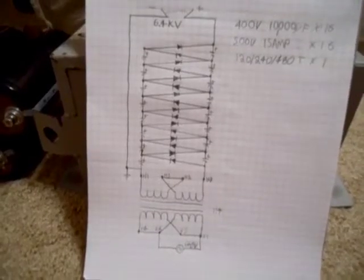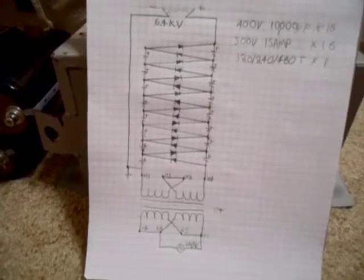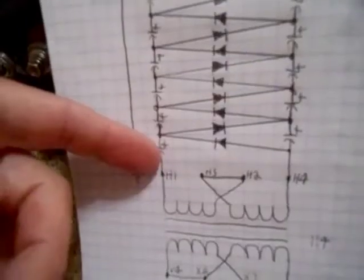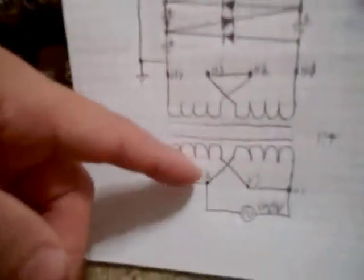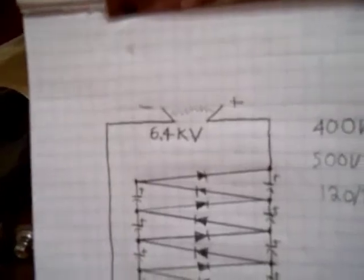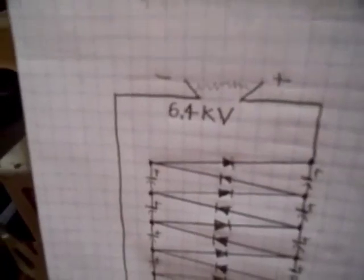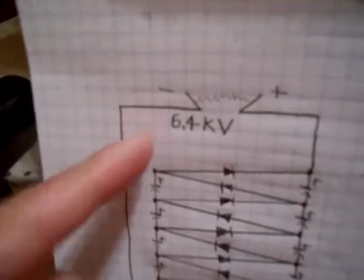A voltage multiplier simply takes low voltage AC and turns it into high voltage DC. These capacitors charge in parallel and they discharge in series. In this case, I'm taking 100 volts AC and turning it into 6.4 kilovolts DC. Meaning, this output is going to have some serious wattage behind it.